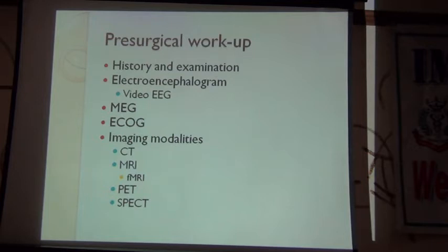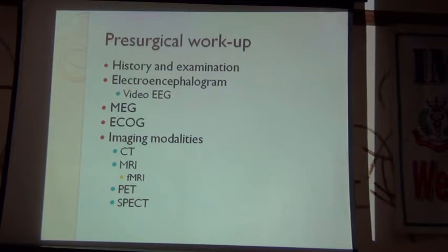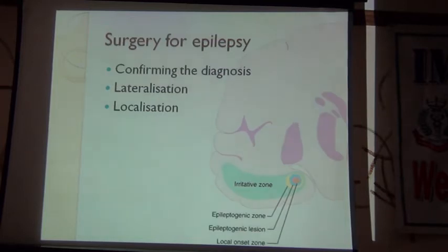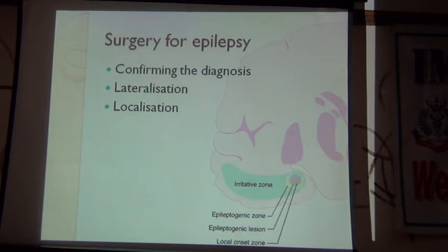If available, magnetic source imaging can provide complementary information. In cases where it is doubtful whether the seizures are coming from left or right, intracranial monitoring — electrocorticography — can be done. MRI is considered the gold standard for imaging. Functional imaging like fMRI is helpful in lateralizing which side speech is coming from, how close the lesion is to the motor cortex, and so on. An interictal or ictal PET scan, wherever available, is also helpful. Surgery does not only involve resecting the epileptic focus — it also involves confirming the diagnosis, lateralizing whether it is coming from left or right, and then localizing exactly where the surgical target is.